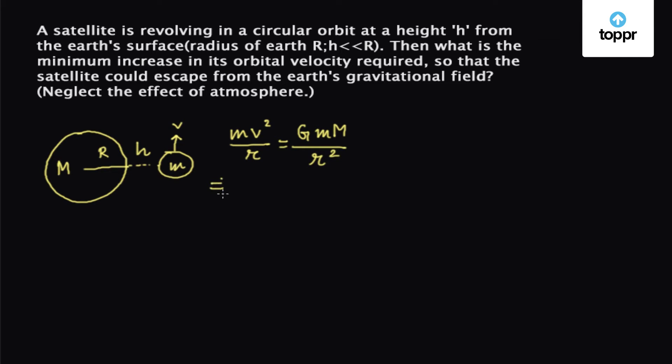Which implies m gets cancelled with m, r gets cancelled with r, so we have v equals root over GM upon r. So this is the velocity of the satellite in its orbit.